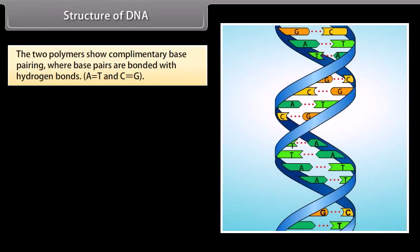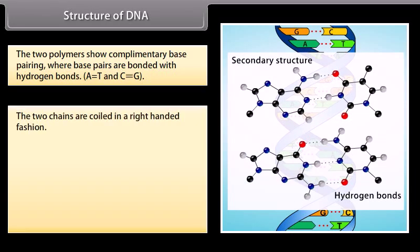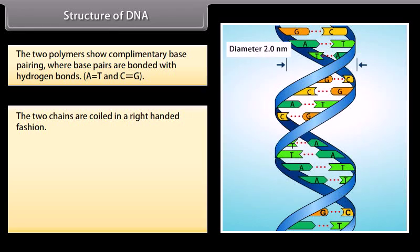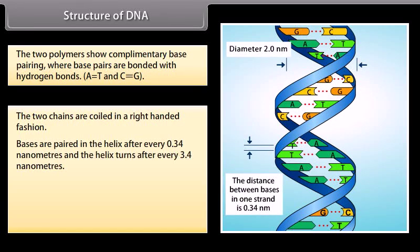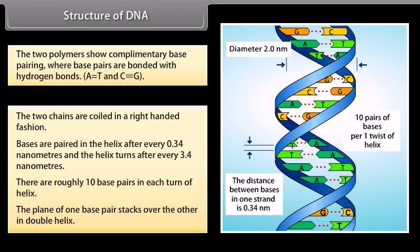The two polymers show complementary base pairing, where base pairs are bonded with hydrogen bonds. The two chains are coiled in a right-handed fashion. Bases are paired in the helix after every 0.34 nanometers, and the helix turns after every 3.4 nanometers. There are roughly 10 base pairs in each turn of the helix. The plane of one base pair stacks over the other in the double helix.